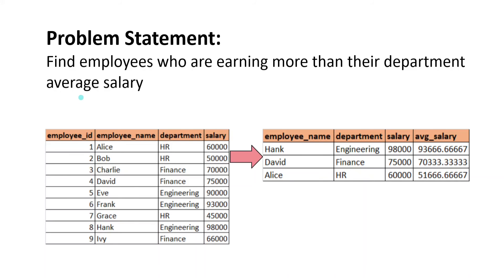Let's say I have an employee table which has department name and salary for all employees. If you look at the department HR, I have three records — employee 81, 2, and 7. I need to find the average salary for this department. The salaries are 60,000, 50,000, and 45,000. I have to sum these three values and divide by 3, which is going to give the average salary for department HR, which is going to be 51,666.